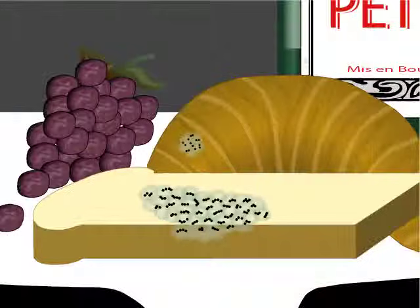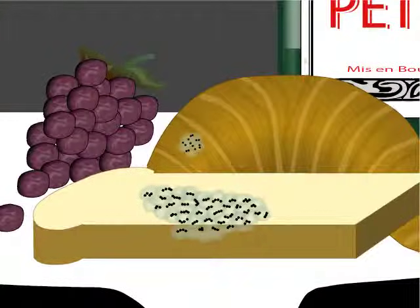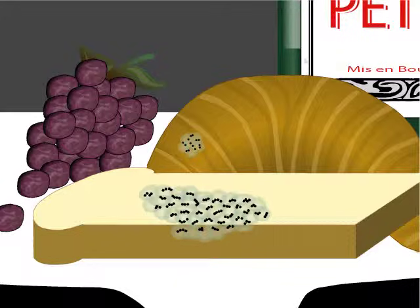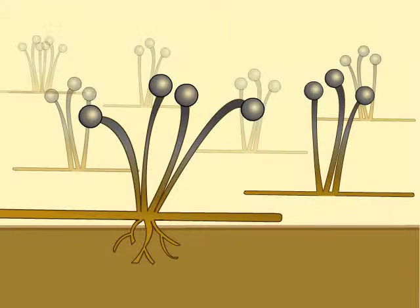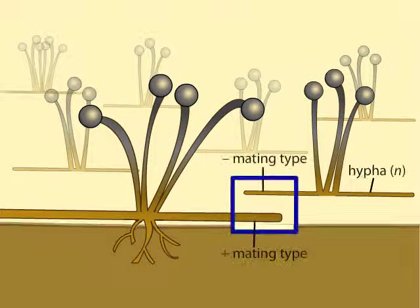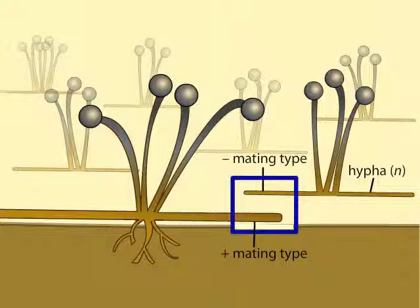In addition to asexual reproduction, the fungus may initiate sexual reproduction. Although Rhizopus does not have two distinct sexes, it does have two distinct mating types, designated plus and minus.